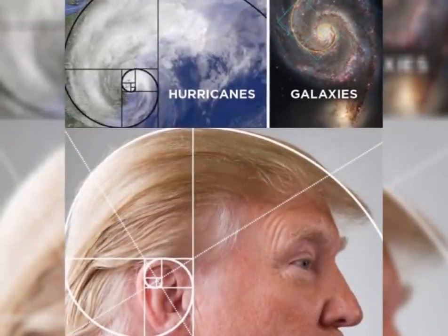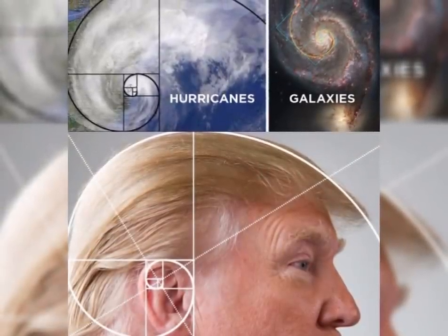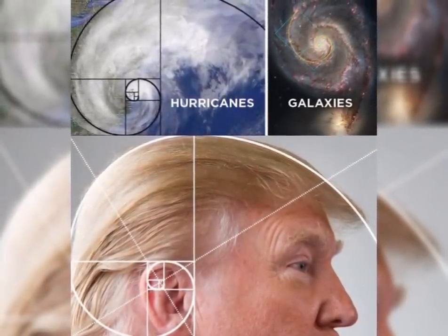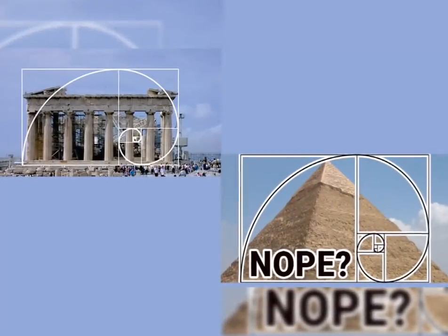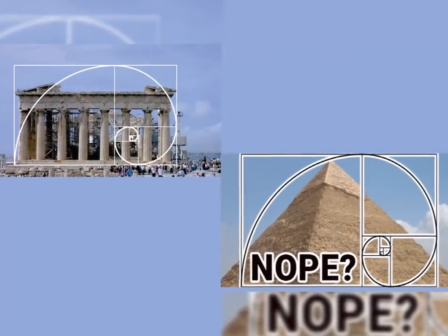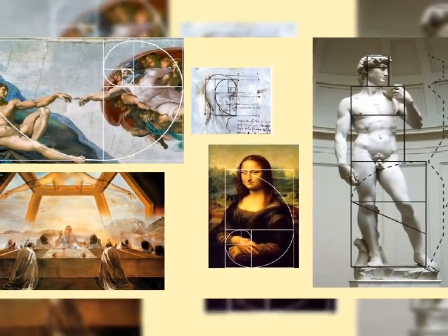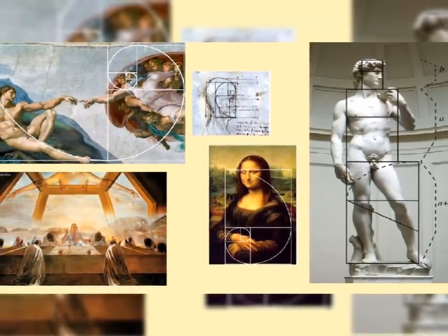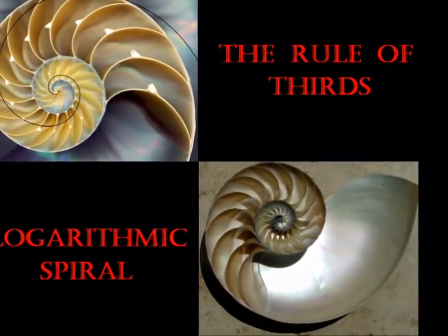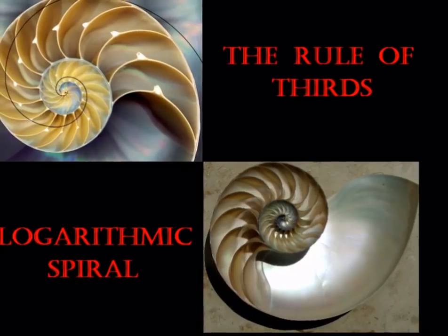Maybe the Golden Ratio is not present in the hurricanes and the galaxies. And perhaps it was not observed in the Parthenon and the pyramids. Maybe the Golden Proportion was not followed by Vinci, Dali, and Michelangelo. And even the Nautilus Shell Spiral is not the Golden Spiral.